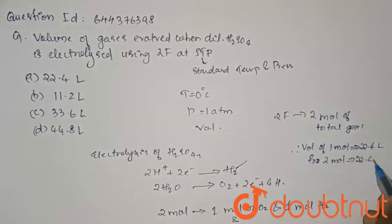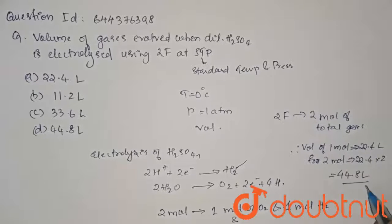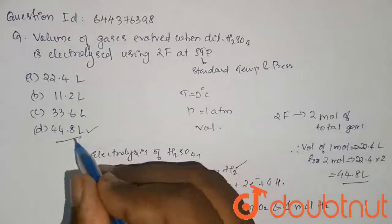For 2 moles, it is 22.4 times 2, that is 44.8 liters. So the answer is option D. Thank you.